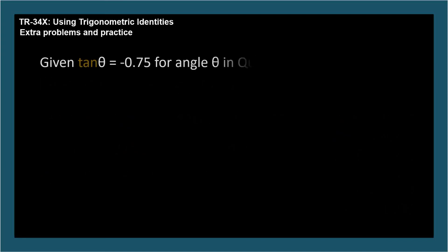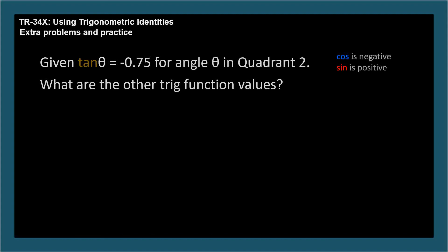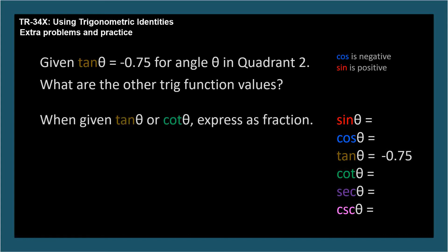Given that the tangent is negative 0.75 for an angle in quadrant 2, what are the values for the other trig functions? First let's note that for angles in quadrant 2, the cosine will be negative and the sine will be positive. Let's make our checklist and note that the tangent is negative 0.75. When given tangent or cotangent, express it as a fraction. For our angle, negative 0.75 can be easily expressed as negative 3 fourths. Since tangent is sine over cosine, and the cosine is negative, I made the 4 negative.